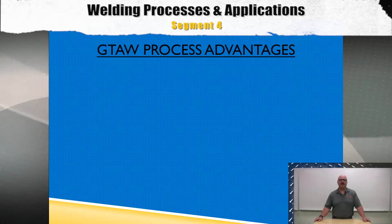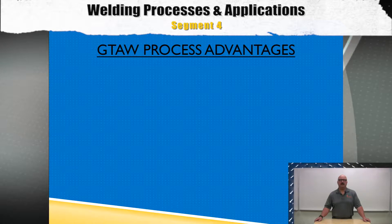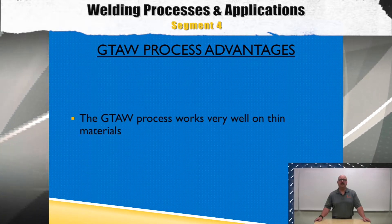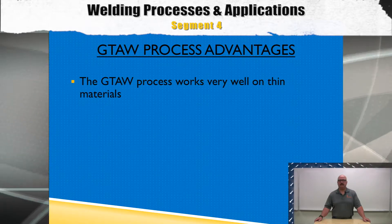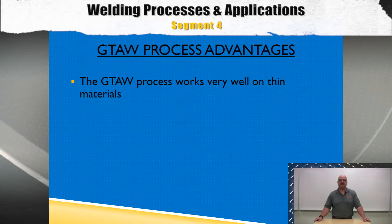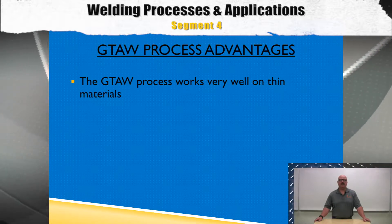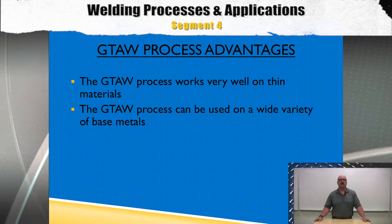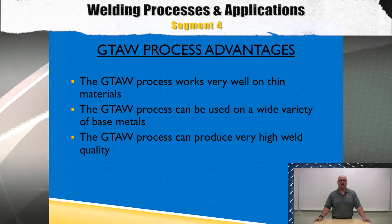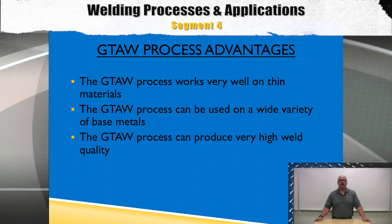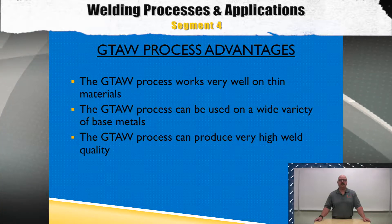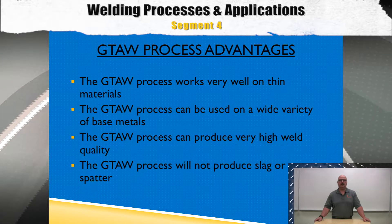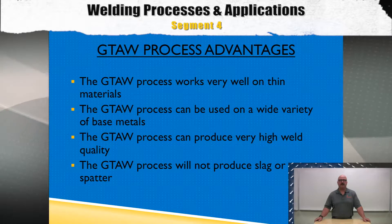Now a little bit about GTAW process advantages. Because of the fine arc control of the GTAW process, it works very well on thin materials. Another big advantage is that it works very well on a wide range of base metal alloys. The GTAW process can also produce very high-quality welds, and a very important quality feature is that it will not produce any slag or spatter.